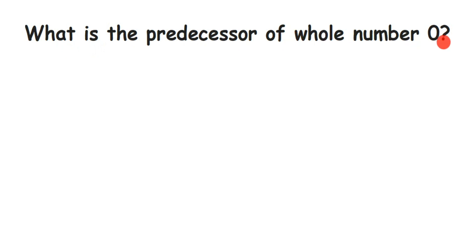This is a very interesting and simple question. Predecessor means a number which comes just before the given number. So to find it, we subtract the given number by one to get the answer.